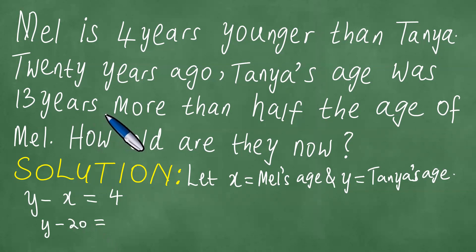This was 13 years more than half the age of Mel. So we compare it with half the age of Mel 20 years ago, which is X - 20. We add 13 here because Tanya's age was 13 years more. To equate the two expressions, we must add 13 to the side that is 13 years less. This gives us: Y - 20 = 1/2(X - 20) + 13.